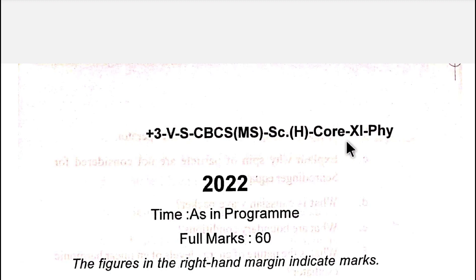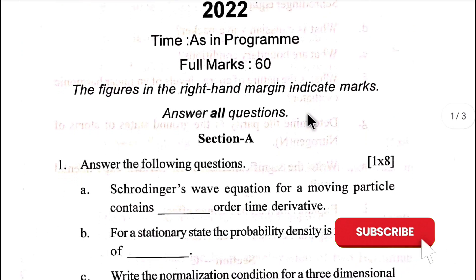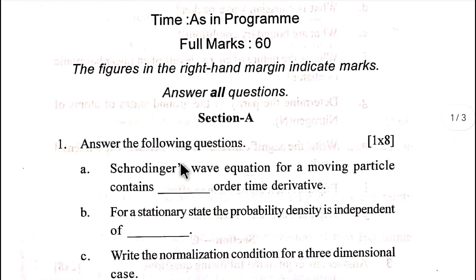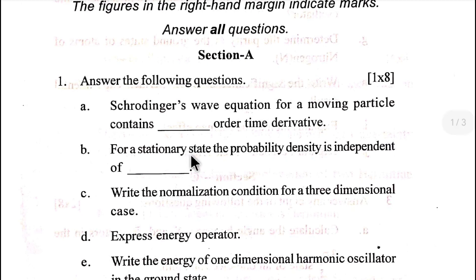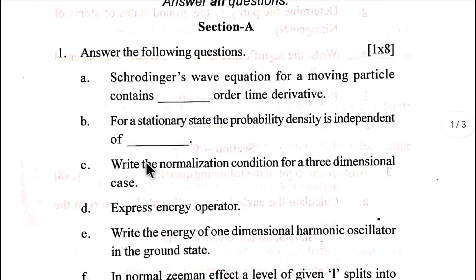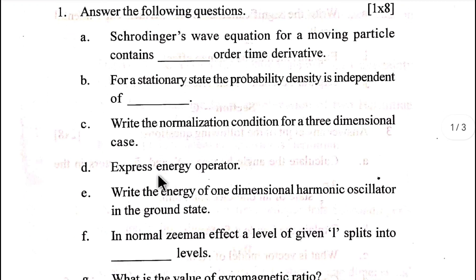Fifth semester physics honors score. Section A, question number one: Schrödinger's wave equation for a moving particle contains dash order time derivative. For a stationary state, the probability density is independent of dash. Write the normalization condition for a three-dimensional case.